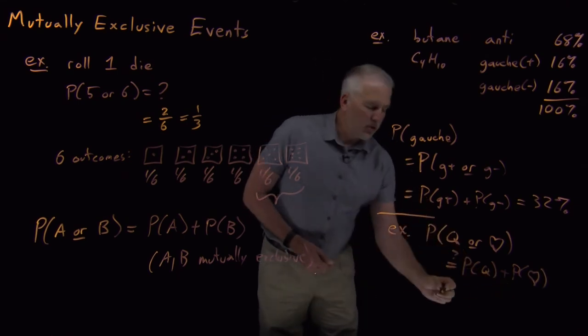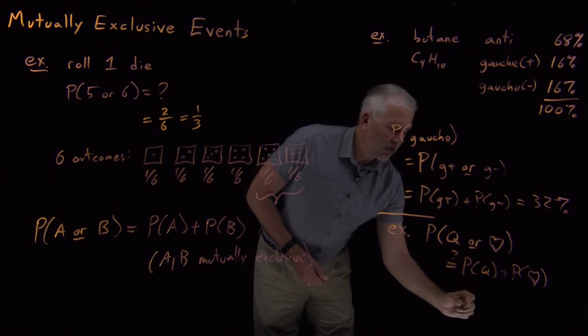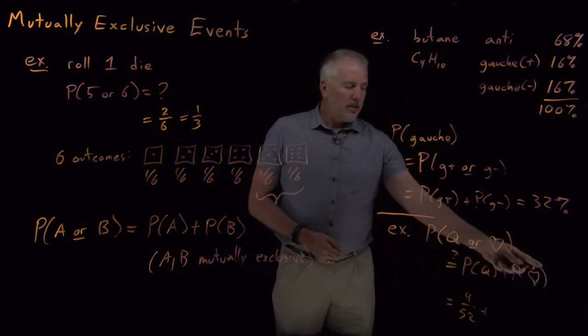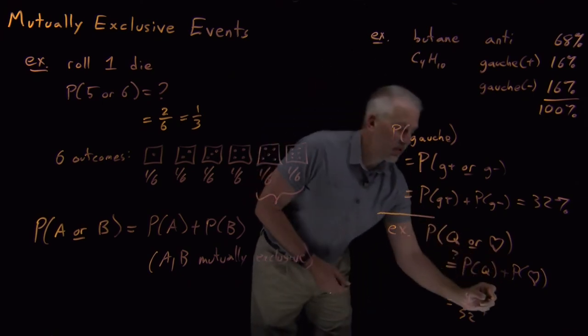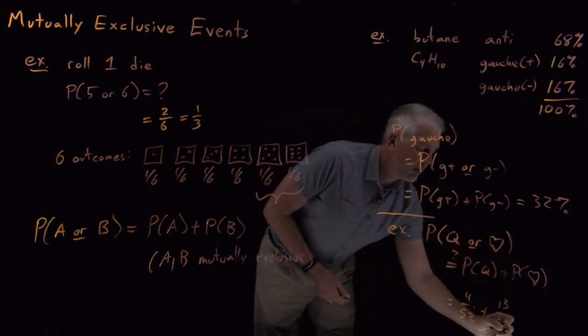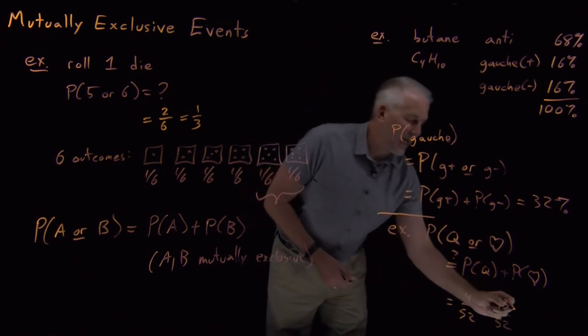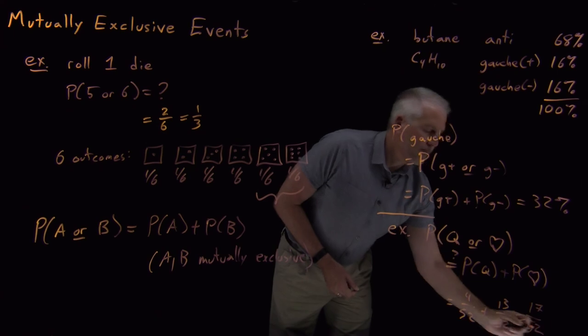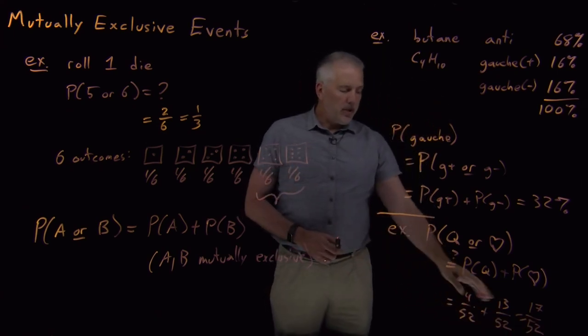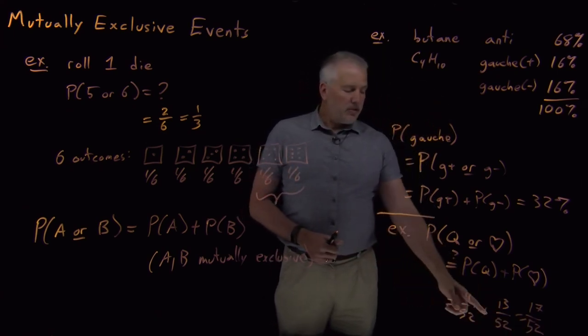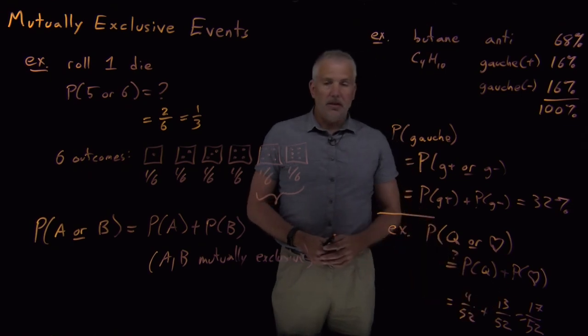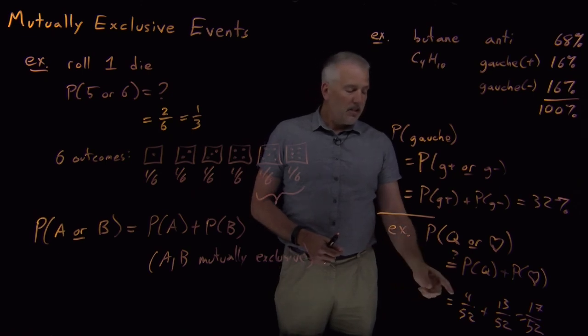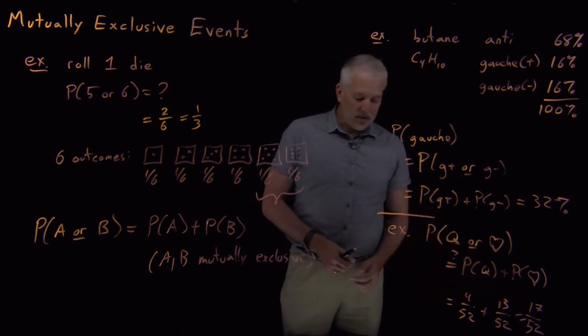The probability of drawing a queen out of the 52 cards in the deck, there's four cards that are queens and there's 13 cards that are hearts. So there's 13 chances out of 52 that I could draw a card that's a heart. So if I add those together, I would get 17 out of 52. But we know that's not the right answer. Those 13 cards that are hearts include the queen of hearts. There's only three additional queens that are not hearts. So adding these two numbers together doesn't give us the right answer.